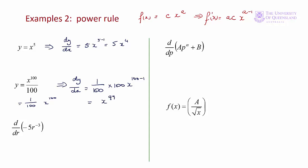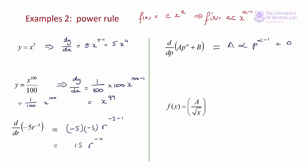The third example has the derivative of a slightly different form but it's the same process: the derivative of -5r^(-3) equals (-5)·(-3)·r^(-3-1) = 15r^(-4). The fourth example includes a constant: the derivative of a·p^α + b is a·α·p^(α-1) + 0 = a·α·p^(α-1), since the constant b differentiates to zero.